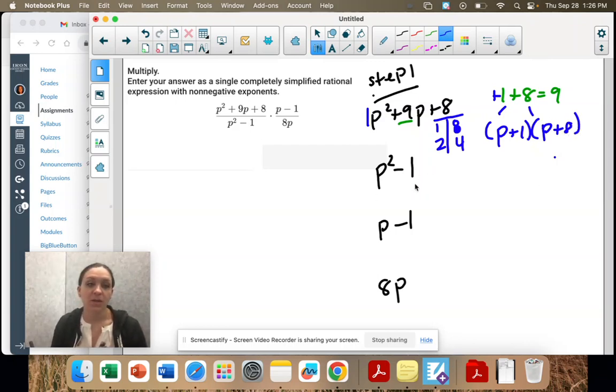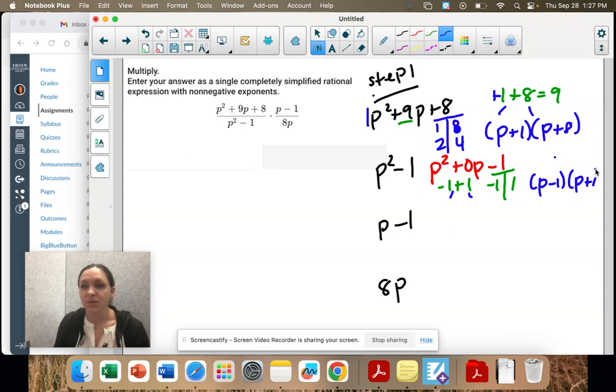p squared minus 1, it's a perfect square. If you want to rewrite it with the 0 in, it's p squared plus 0p minus 1. The only two numbers that multiply to 1 are negative 1 and positive 1. And guess what? They add to 0. So our factors are these: p minus 1, p plus 1.